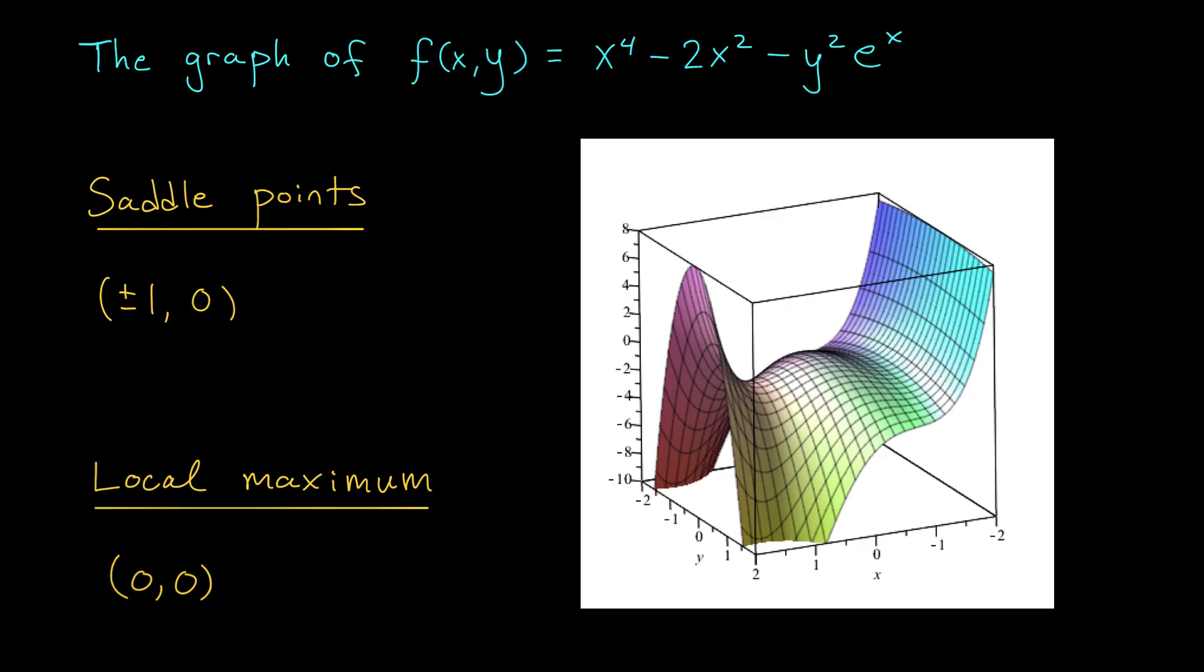Oh, it sure is. At 0, 0, we're at this point here, which you can see is a maximum. At 1, 0, we're going to be at this point here. We have a minimum in this direction and a maximum in this direction. We got ourselves a saddle point. Finally, what about the point minus 1, 0? That's this guy back here. Well, sure enough, we have a maximum in this direction and a minimum in this direction. That, my friends, is a saddle point.